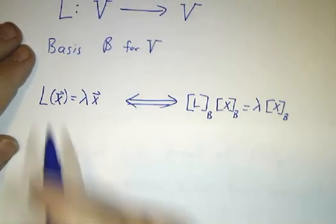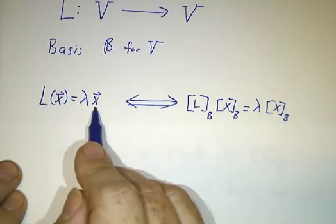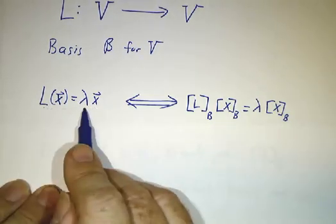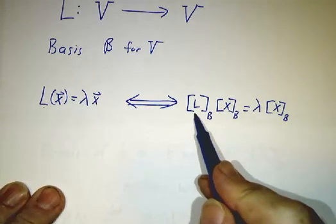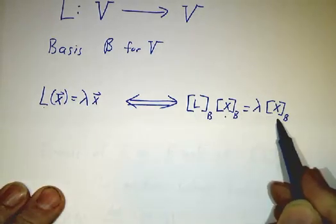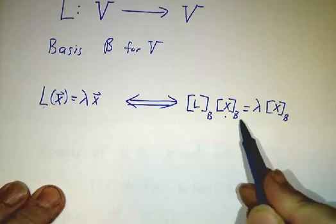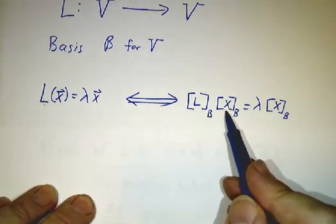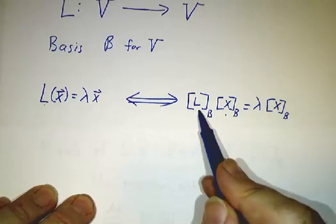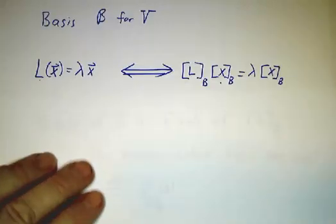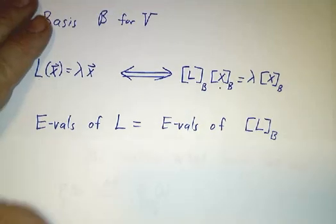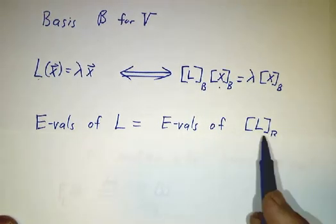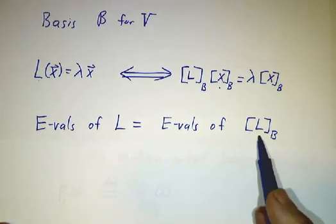And we know that if L is a multiple of x, you just take the coordinates of both sides and you get that the matrix of L times the coordinates of x equals lambda times the coordinates of x. And that means that the coordinates of x is an eigenvector of the matrix of L with eigenvalue lambda. In other words, the eigenvalues of L are exactly the eigenvalues of the matrix of L.